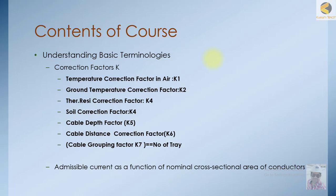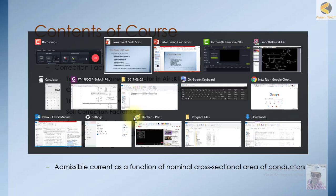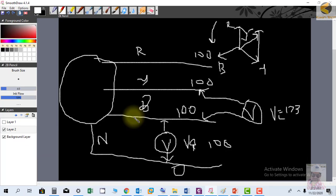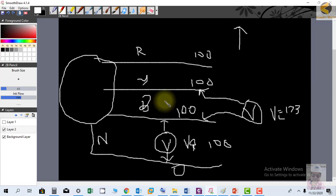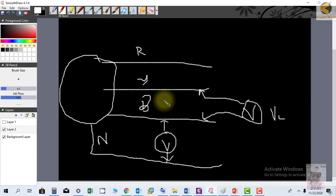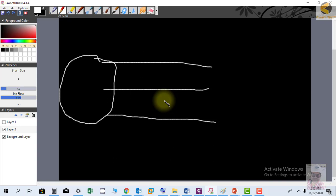If the cable is running alone, the correction factor K could be 1. But if the cable is used with 10 other cables together in a very tight conduit, there will already be a heating effect. You then have to multiply by a certain factor called the K factor. You cannot use the cable at its full capacity because of certain environmental factors. All these factors are called K factors.